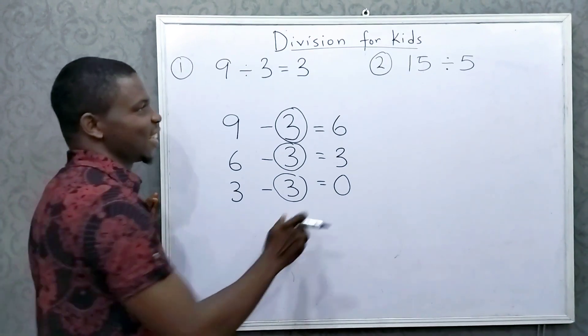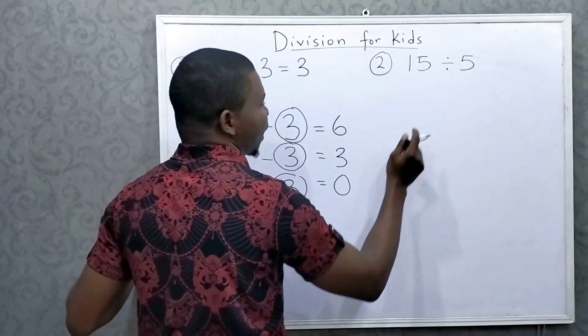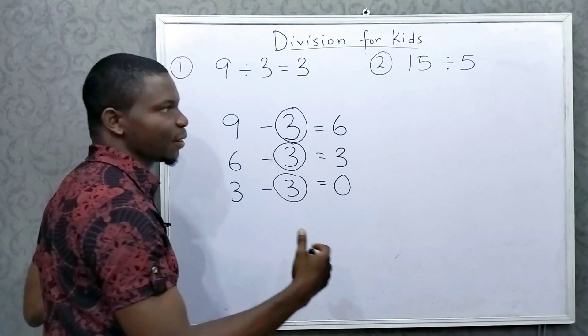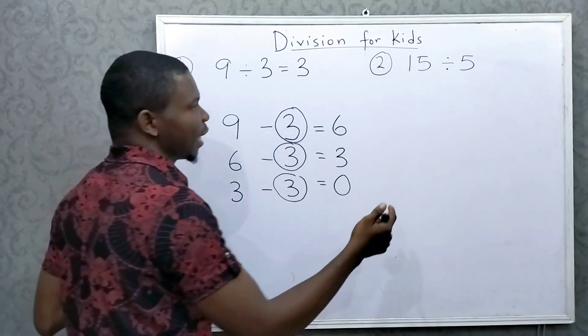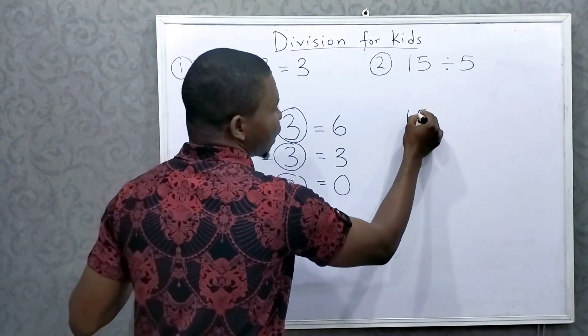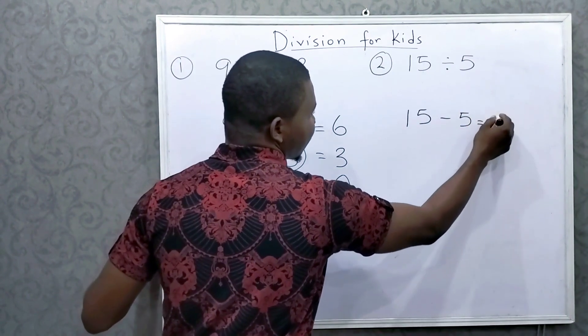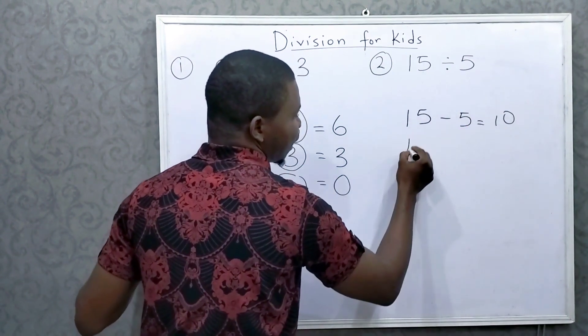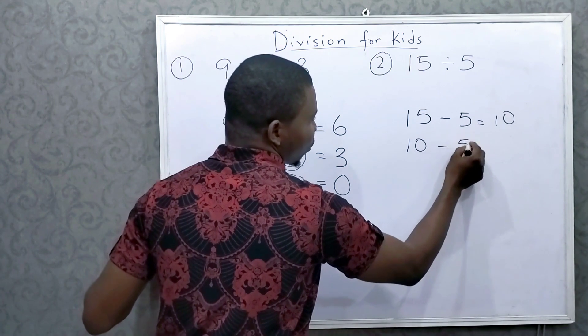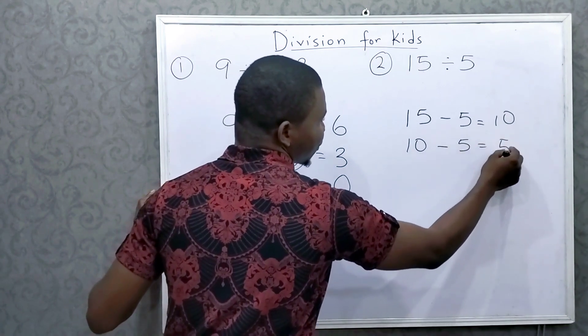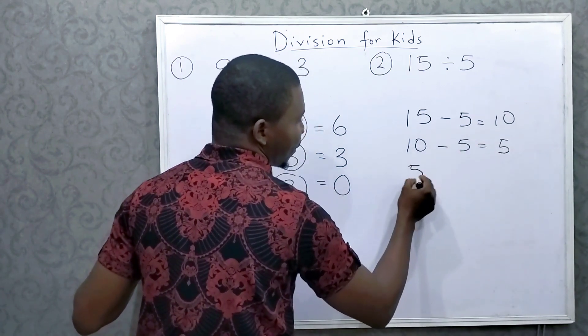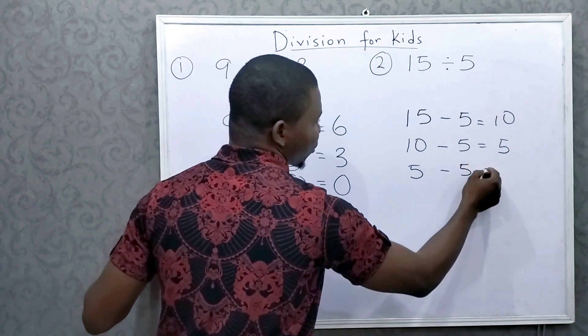Easy, right? 15 divided by 5. So I'll keep subtracting 5 until I get to 0. So 15 minus 5 is equal to 10. Then 10 minus 5 is equal to 5. Then this 5 minus 5 is equal to 0.